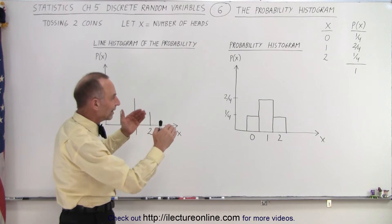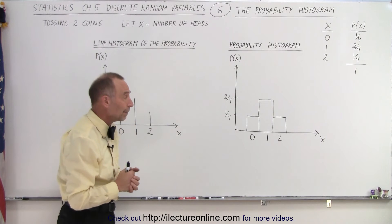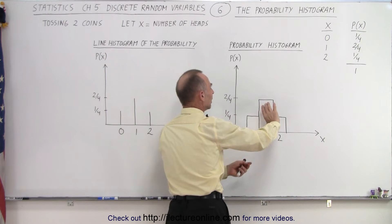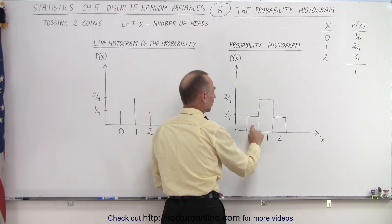Also notice that this gives us a visualization of the relative probability. You can see that this is twice as high as these two, so visually the probability of getting 1 head is twice as great as the probability to get 0 heads or 2 heads.